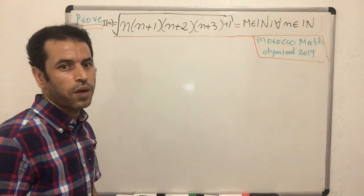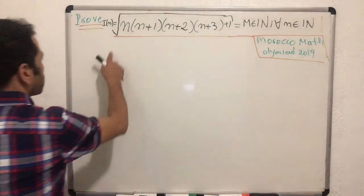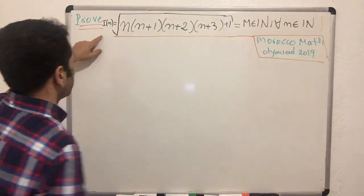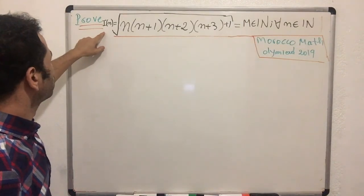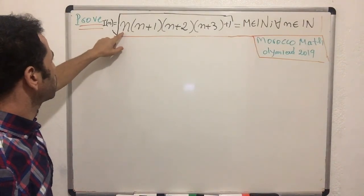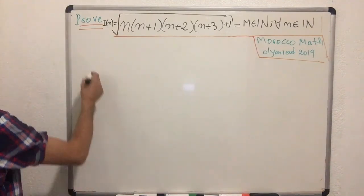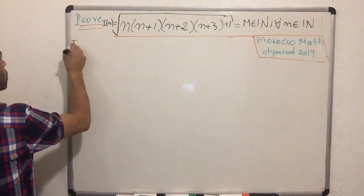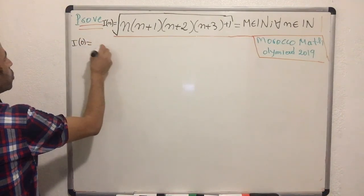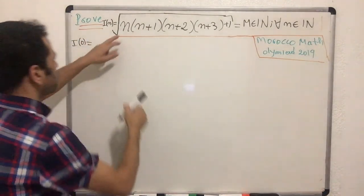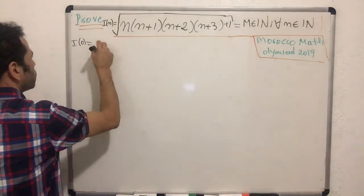Let's start by calculating the terms. We'll start with the term i(0) — let's plug zero into n to see what the expression gives us.